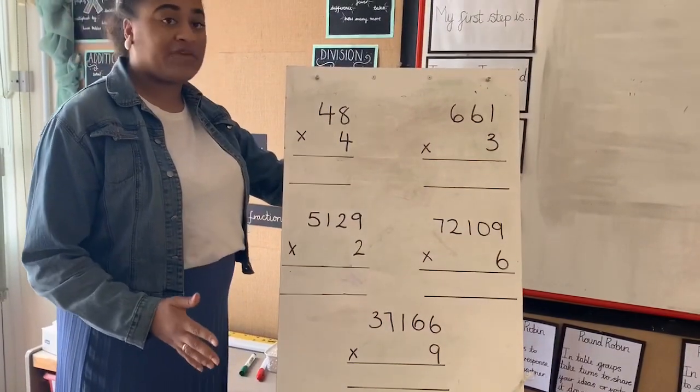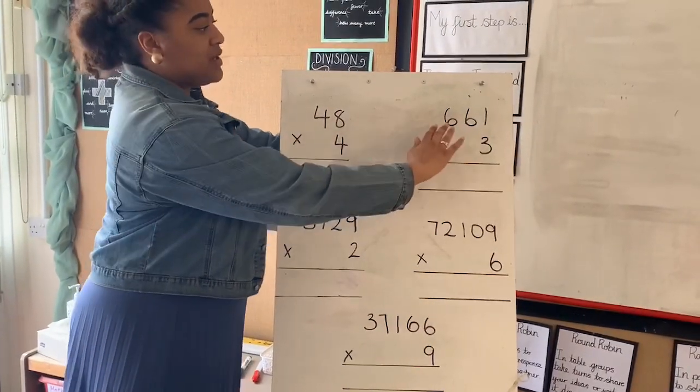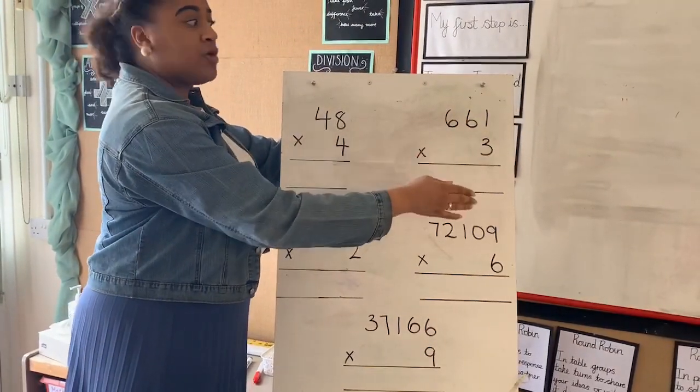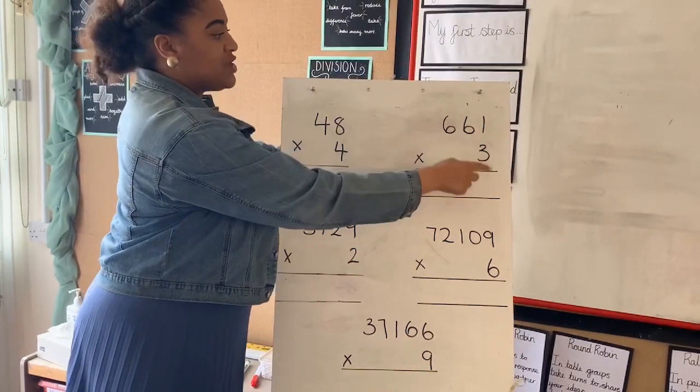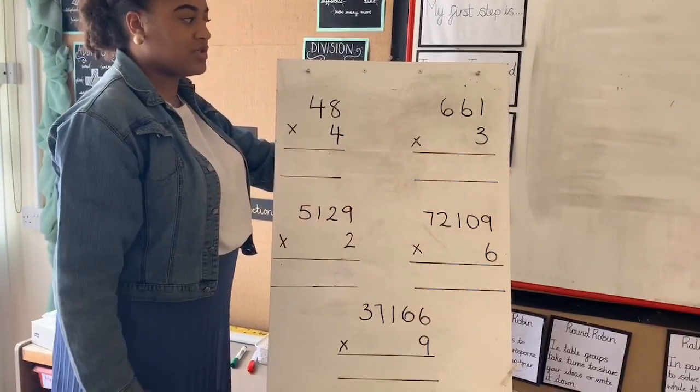So on the board you can see our five calculations for you to have a go at by yourselves. There are numbers that are bigger than two digits. Any numbers that are bigger than two digits, you're still going to follow the same method that we did, digit by digit, starting in the ones, tens, hundreds, and going on until you get your answer. So have a go.